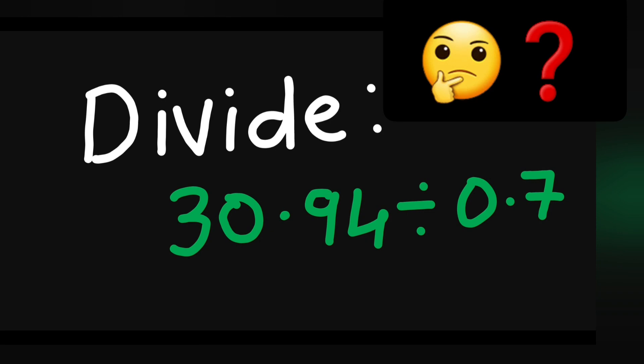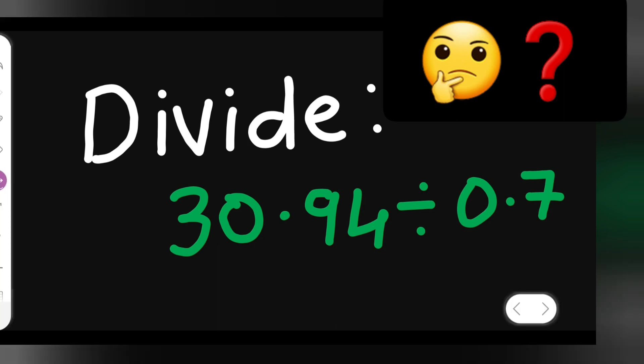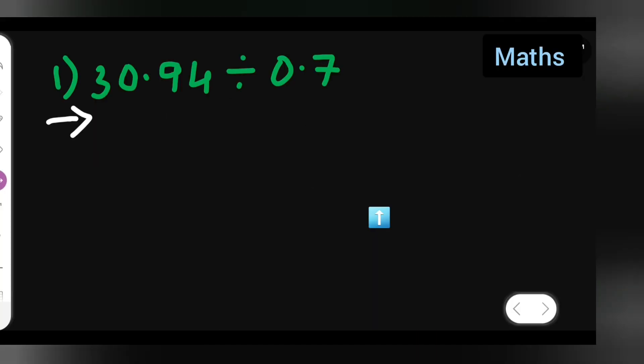Welcome to today's mathematics class. Let's see how to divide 30.94 divided by 0.7. First, write down the question: divide 30.94 divided by 0.7.